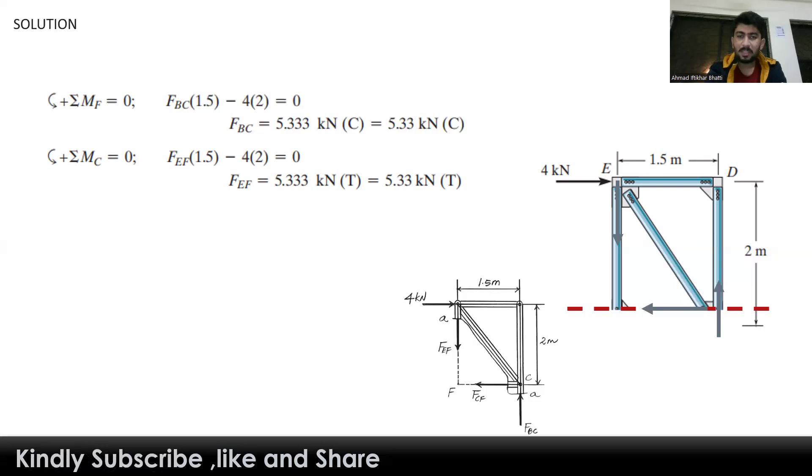Lastly, we apply the summation of forces in the horizontal direction. We have the 4 kilonewton force and the force in member CF. This is negative because it acts in the negative x direction, while the 4 kilonewton force is positive. We get the force in member CF as 4 kilonewtons in tension.